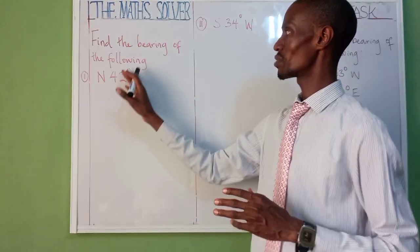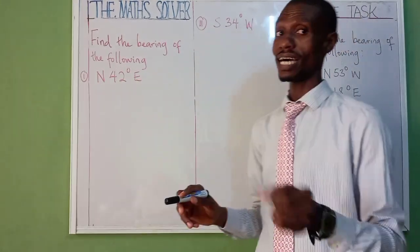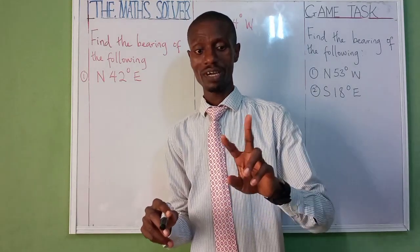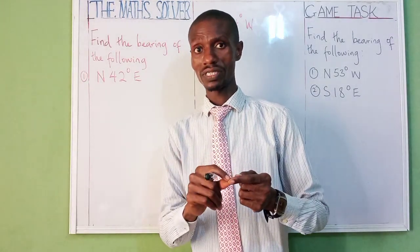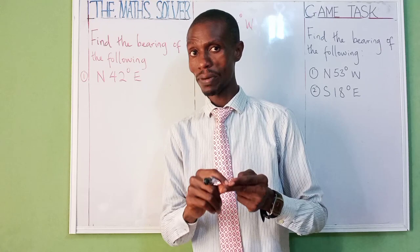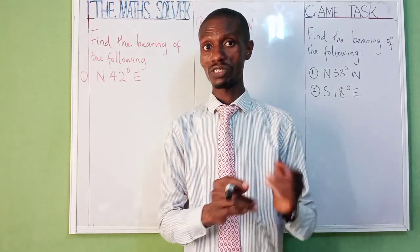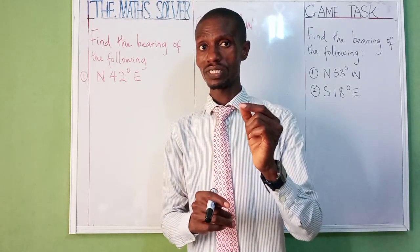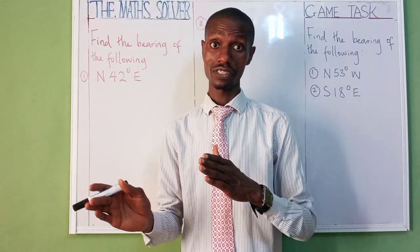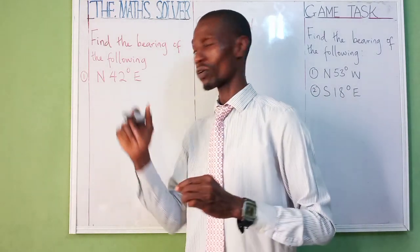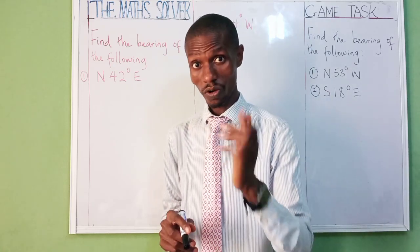How do we solve bearing? We have two types of bearing: three-figure bearing and compass bearing. Your three-figure bearing is also called surveyor's bearing — that is different from compass bearing.